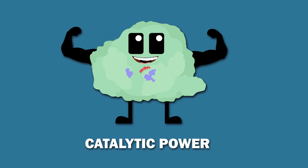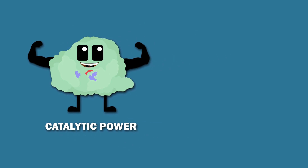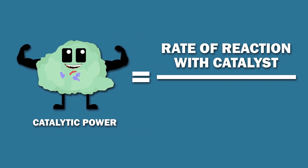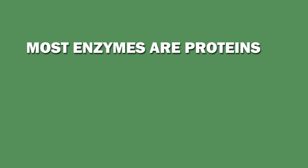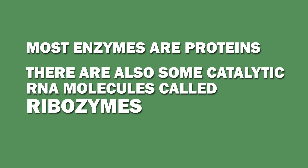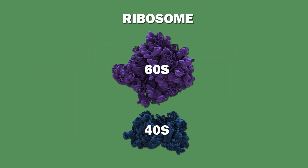The catalytic power of a catalyst is the ratio of the rate of a reaction with that catalyst versus without it. Most enzymes are proteins, though there are also some catalytic RNA molecules called ribozymes. One example of a ribozyme is the ribosome.